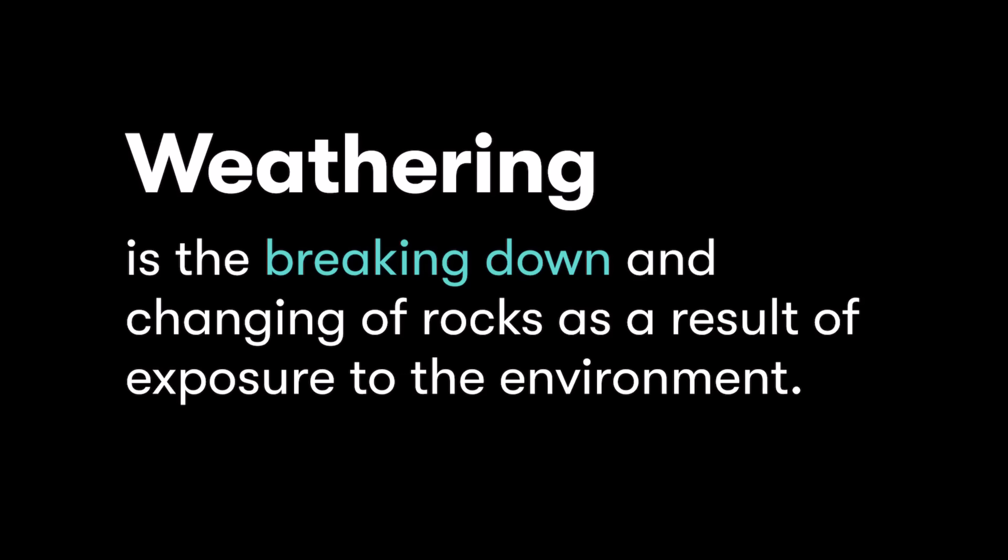If I have a large slab of granite in nature and over hundreds and thousands of years the waves of the ocean are crashing onto that rock, inevitably the rock is going to break down into smaller pieces, it might get rounded out — it's essentially going to change as a result of exposure to its environment. That's just one example of what weathering can be, and there are lots of different types we'll look at in this video.